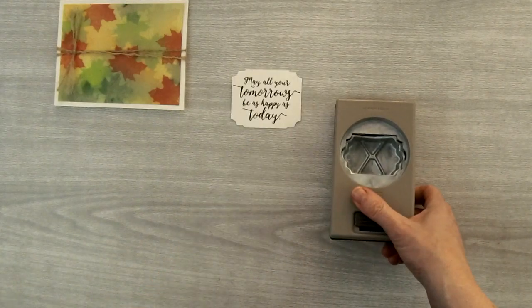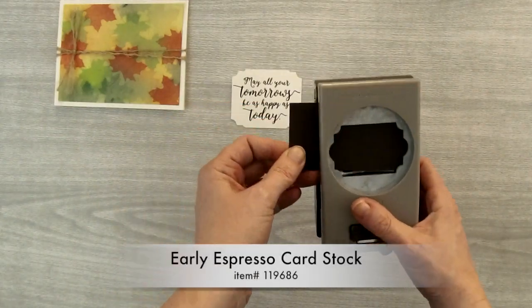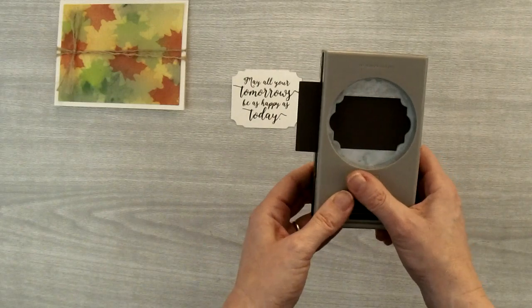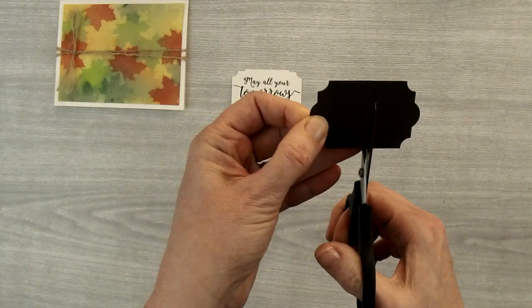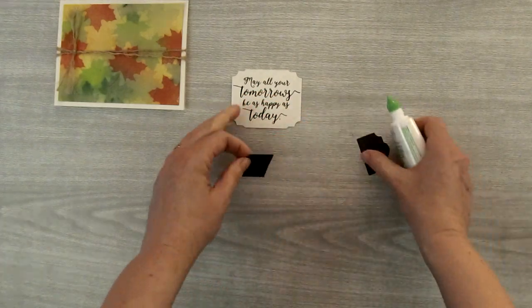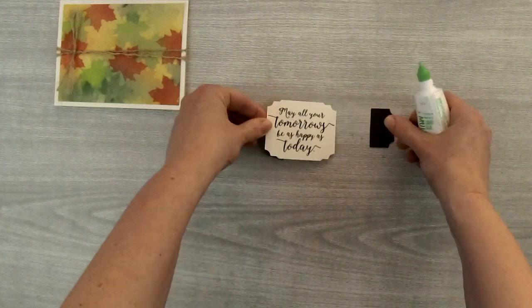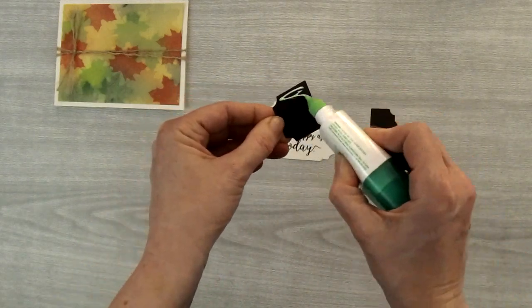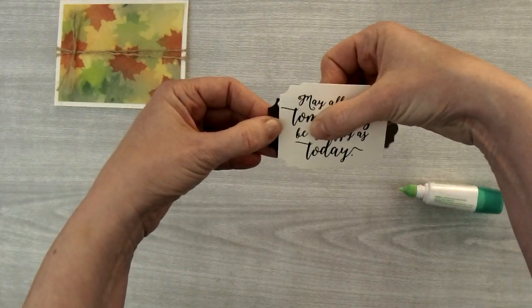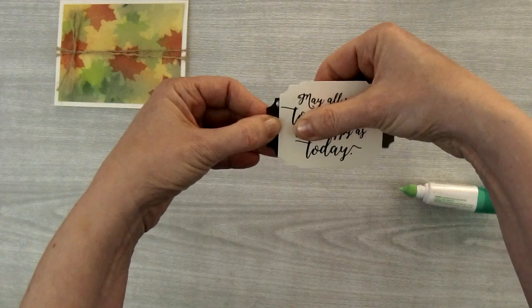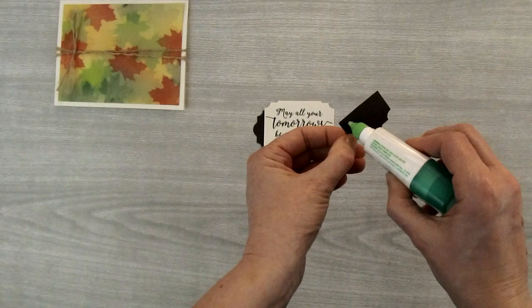Then I'm going to need just one more punched piece. I'm going to take a piece of Early Espresso cardstock and I'm just going to punch it normally this time. Then I'm going to take this piece and I'm just going to cut it in half with my scissors. And I'm going to attach it on the ends like this. So I'll put a little bit of Tombow on this end and just adhere it on the end of my greeting.